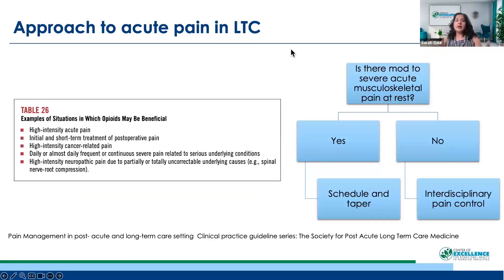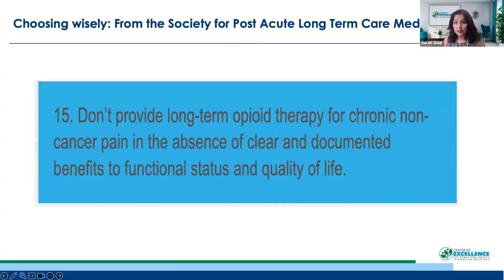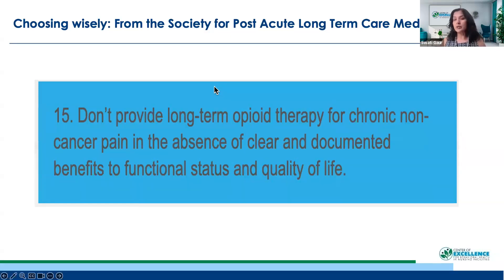This is the approach to acute pain in long-term care. The Choosing Wisely recommendation from the Society of Post-Acute Long-Term Care says: don't provide long-term opioid therapy for chronic non-cancer patients in the absence of clear and documented benefit to functional status and quality of life.